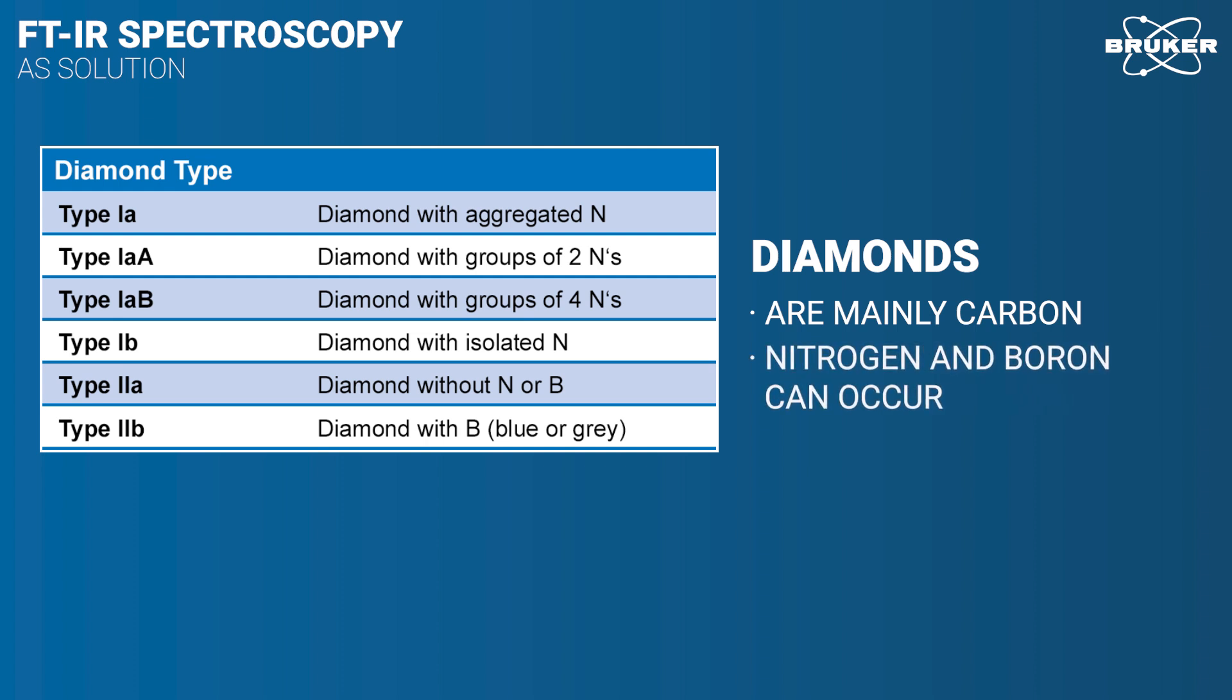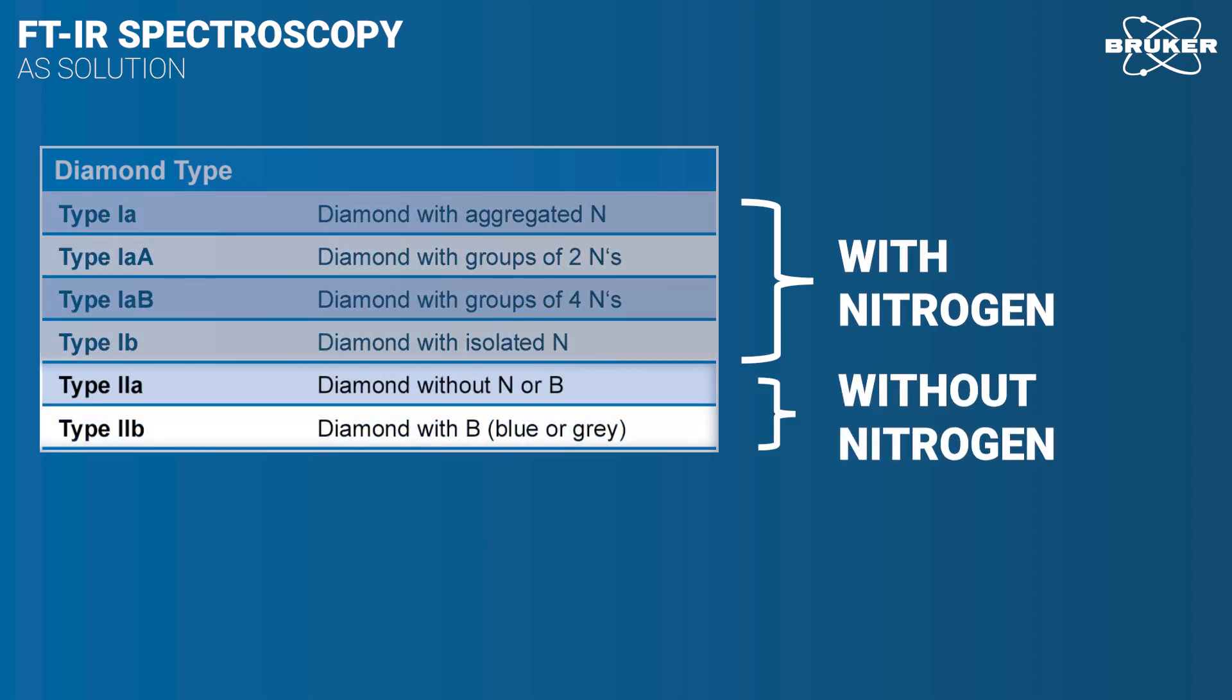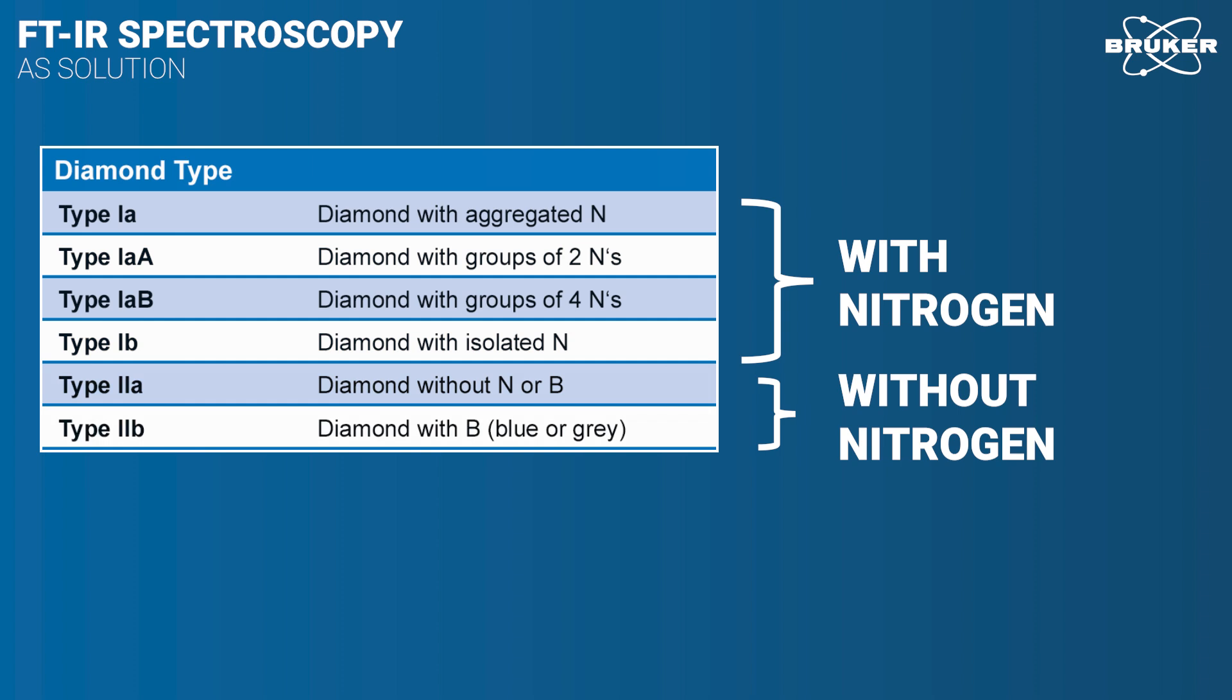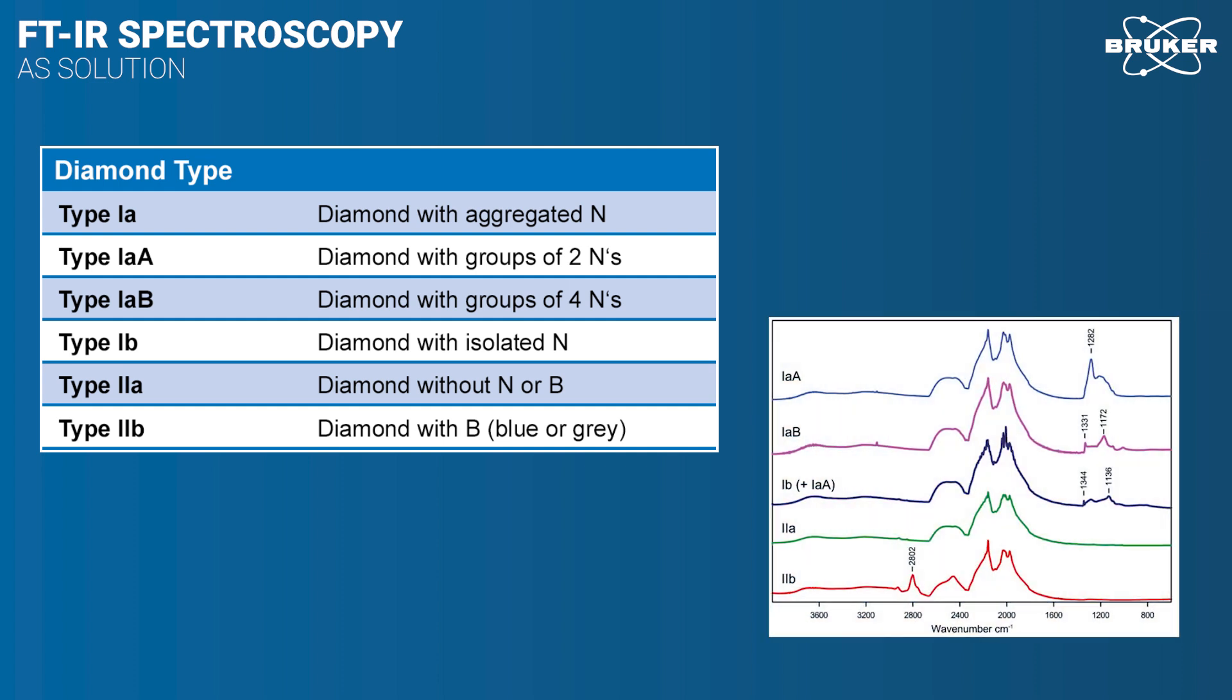Depending on their origin, nitrogen as well as boron can occur in a crystal lattice. Nitrogen is the most important impurity, as its presence or absence is the basis for the classification system. Type 1 contains nitrogen atoms whereas Type 2 has none. Natural diamonds most often occur with nitrogen groups, which is Type 1a and its subgroups. If one of the remaining diamond types is found by IR spectroscopy, chances are very low that they were formed naturally, but if they were, they would be very expensive.